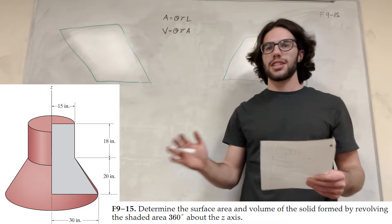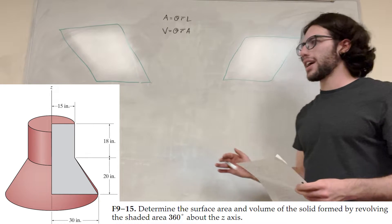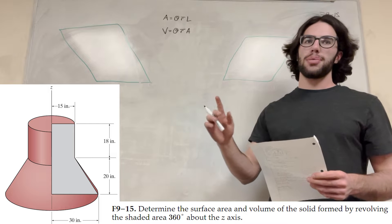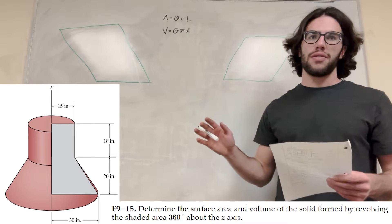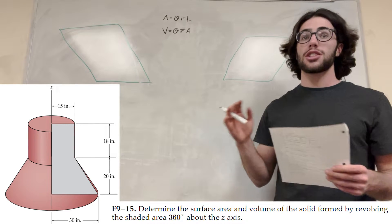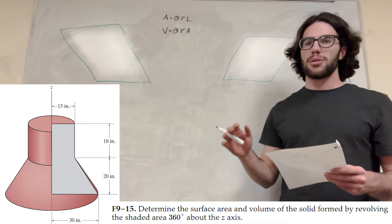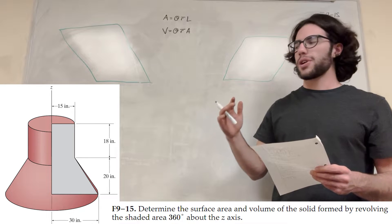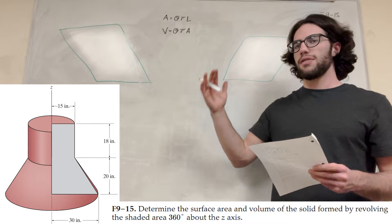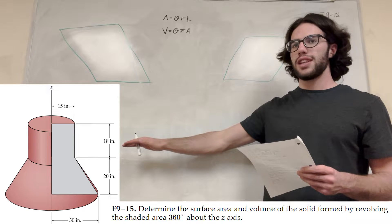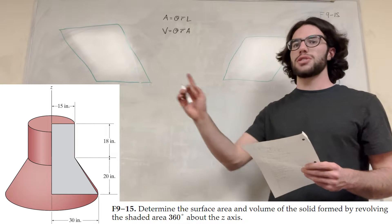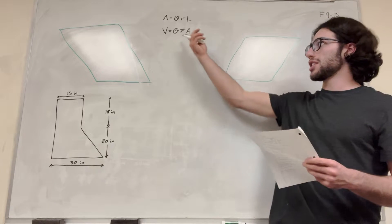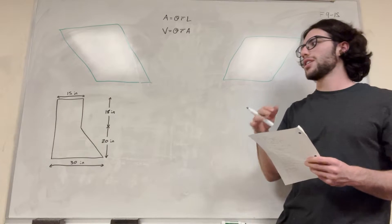What's up Cal gang! Alright, so we got a statics problem today. We have this 3D shape and it wants us to find the volume and the surface area of the shape. The method we're going to use is to take a cross-section, find the area, and then rotate it 360 degrees. That method uses these two formulas here, so let's get started.